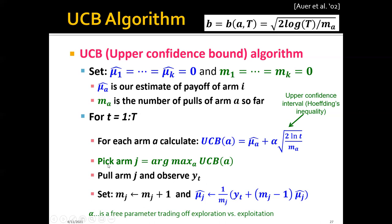In the second step, we take the arm j that has the largest upper confidence bound and pull it. After pulling, we observe the actual reward from this arm. In the last step of each iteration, we update the counter: since we pulled arm j one more time, we increase m_j by one, and we update the average reward for this arm. This is the Upper Confidence Bound algorithm. We can see it naturally incorporates exploitation in the first term and exploration in the second term.